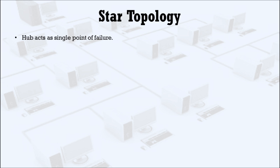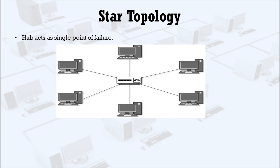Similar to bus topology, the hub acts as a single point of failure. In bus topology, if the bus cable fails, connectivity of all hosts to all other hosts fails. In the same way, if the hub fails, connectivity of all hosts to all other hosts fails.